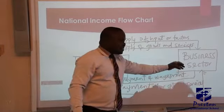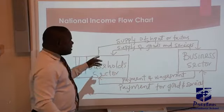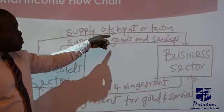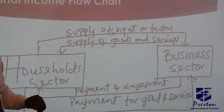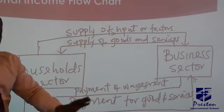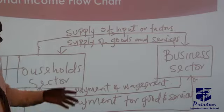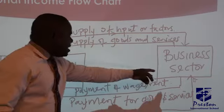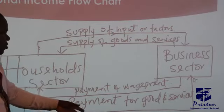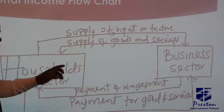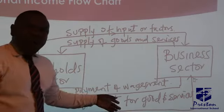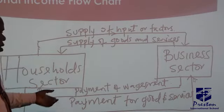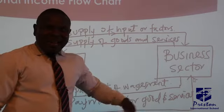Now let us look at the income chart. We have the household sector and the business sector. If you look at the pointing arrow, you will see that the household sector is supplying inputs or factors of production — labor, capital, and entrepreneurship — to the business sector. In return, the business sector supplies goods and services, and pays wages and salaries to households. Households in turn pay for those goods and services.